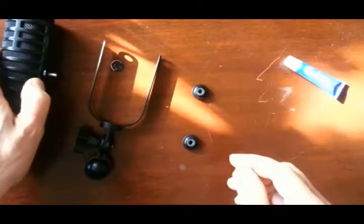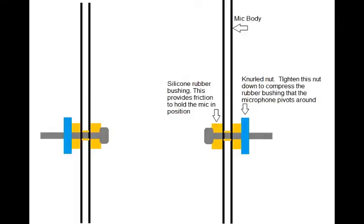So tightening down that little knurled nut provides tension on the rubber bushing against the body of the microphone, and that gives you the friction you need for the microphone to stay in place.